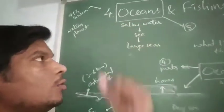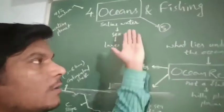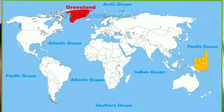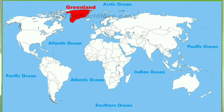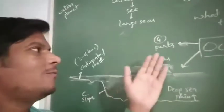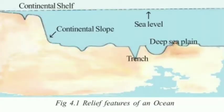We all know that there are majorly five oceans: the Pacific Ocean, the Atlantic Ocean, the Arctic Ocean, the Indian Ocean, and the Antarctic or Southern Ocean. Ocean relief is divided into four parts: continental shelf, continental slope, deep sea plain, and trenches.